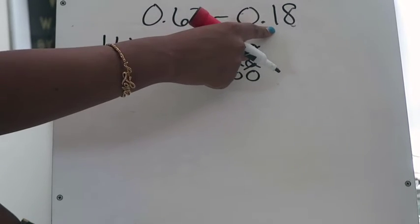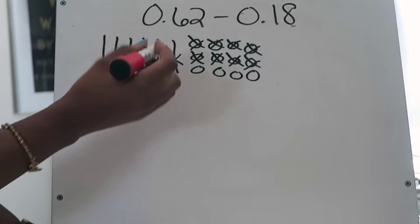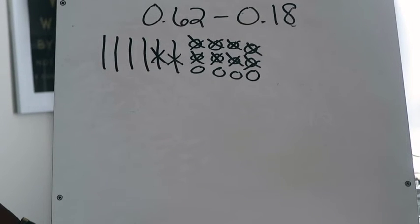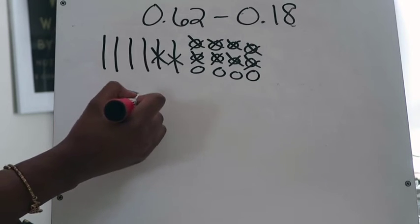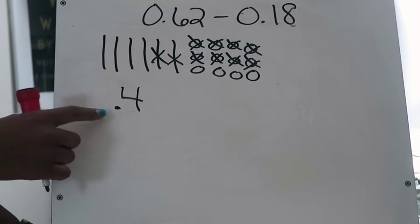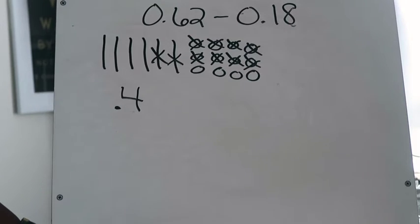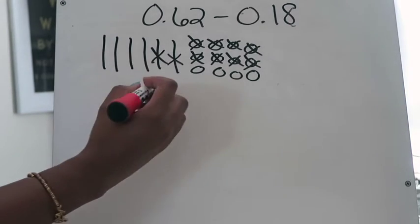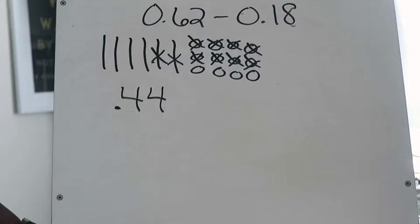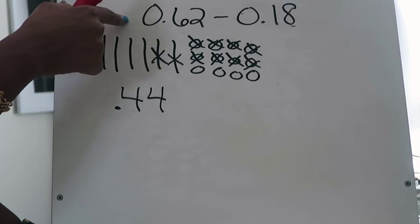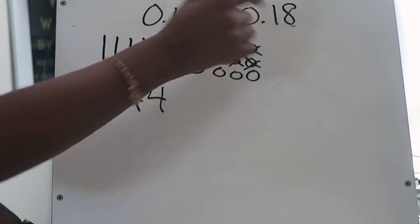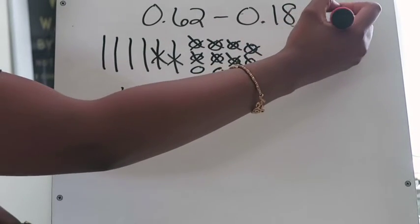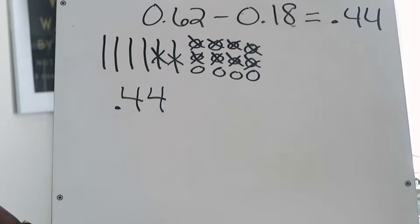Now moving on to the tenths place — I need to take one tenth away. I have enough, so I'll cross out one tenth. Now I look at what's left: I have four tenths and four hundredths remaining. I put my decimal point, a four in the tenths place, and a four in the hundredths place. So sixty-two hundredths minus eighteen hundredths equals forty-four hundredths.